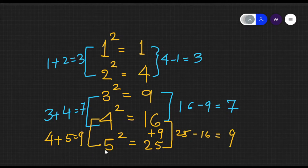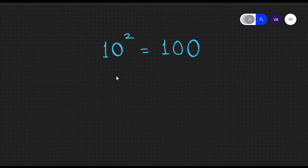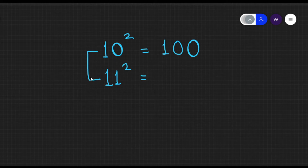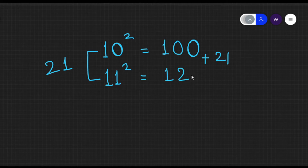Now let's take the square of 10, which is 100. If we know this and are unsure what the square of 11 might be, we do: 10 plus 11 equals 21. You just add 21 to 100 and you get 121.